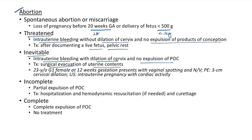Clinical case of inevitable abortion: 23-year-old primigravida at 12 weeks with vaginal spotting and nausea. Examination shows 3 cm cervical dilation; ultrasound shows intrauterine pregnancy with cardiac activity. Bleeding plus cervical dilation but no expulsion — this is inevitable abortion; treat with surgical evacuation. Incomplete abortion — partial expulsion of products of conception: intrauterine bleeding, cervical dilation, and partial expulsion; treat with hospitalization, hemodynamic resuscitation if needed, and curettage.